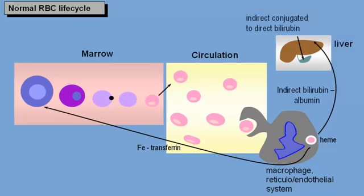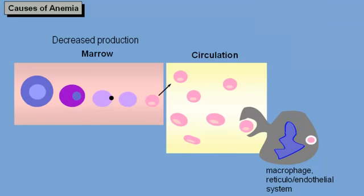Now knowing the normal red cell life cycle, it is obvious that the two main causes of anemia are decreased red cell production, a marrow problem, and increased red cell destruction.